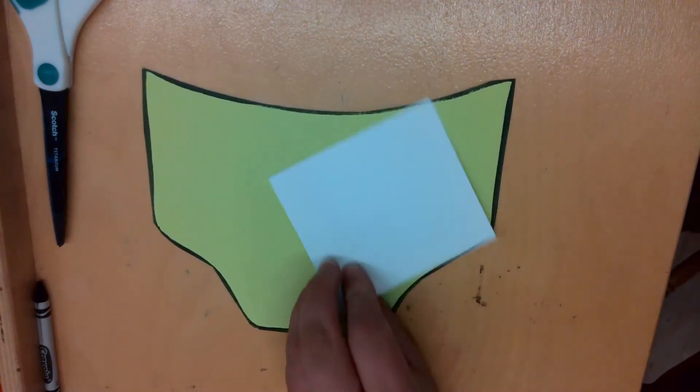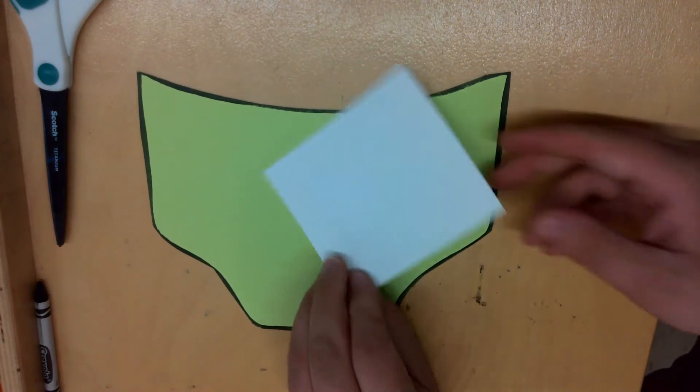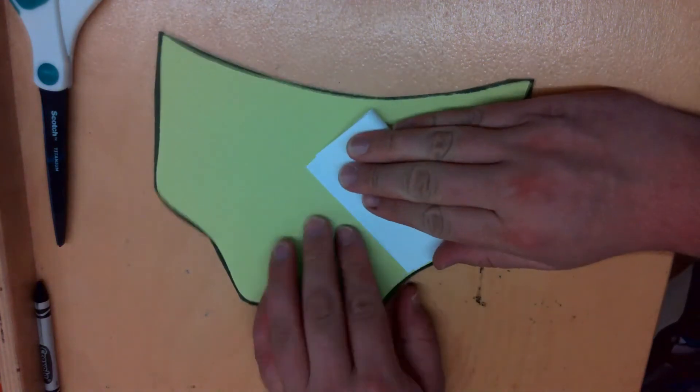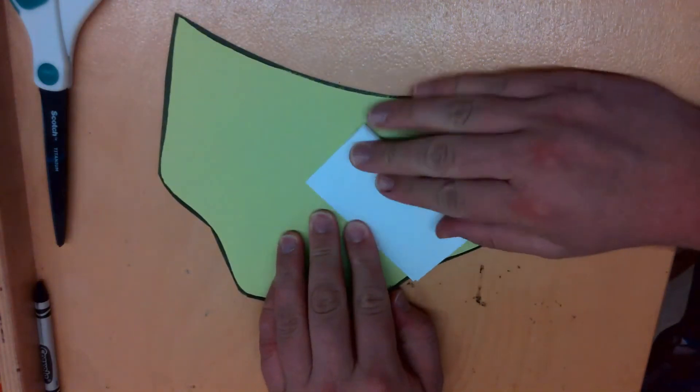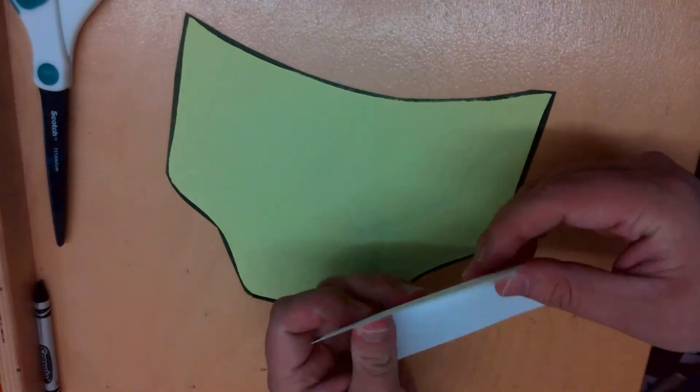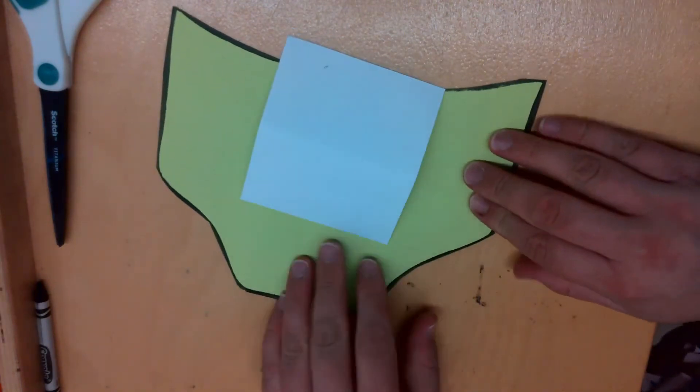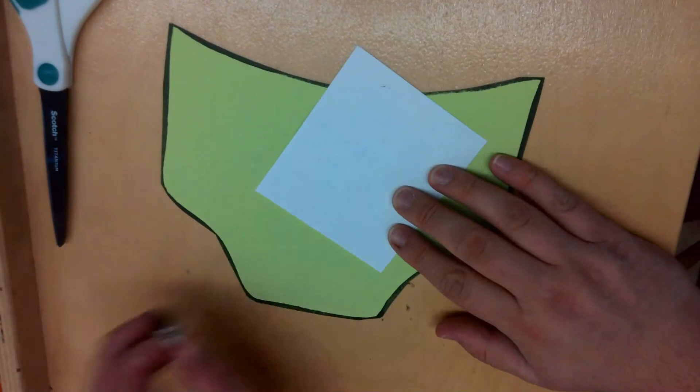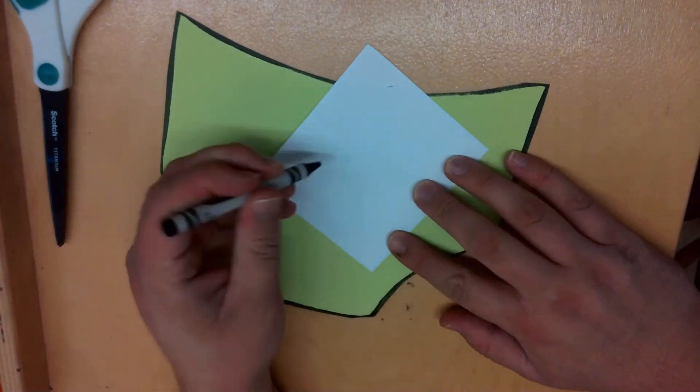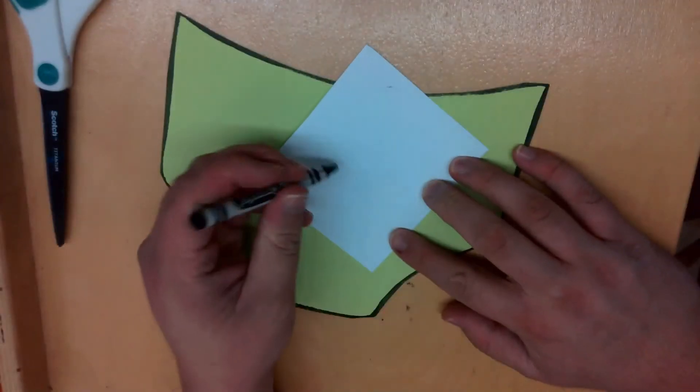So what I want everyone to do with your white paper is to fold the paper in half. Don't have to do it very heavy, just a light fold. Then you're going to take your black crayon and you're going to draw two big circles, one circle on each side.